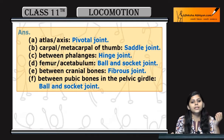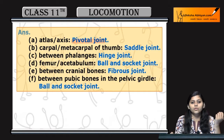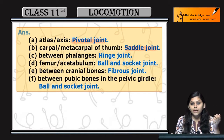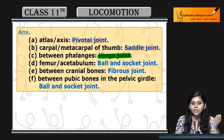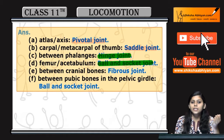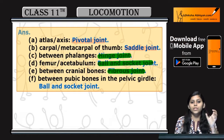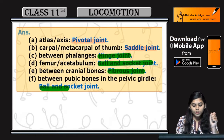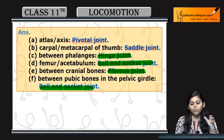Toh koon koon sa hoota hai: atlas aur axis ke beech mein hoota hai pivot joint, metacarpal and carpal of thumb ke beech mein hoota hai saddle joint, phalanges ke beech mein hoota hai hinge joint, femur and acetabulum ke beech mein hoota hai ball and socket joint, fibrous joint present hoota hai in between cranial bones, and ball and socket joint hoota hai pubic bones mein in the pelvic girdle.